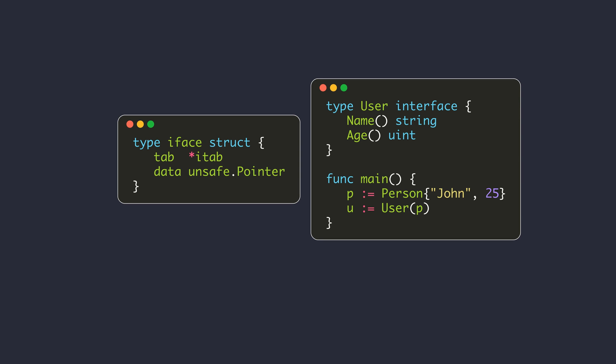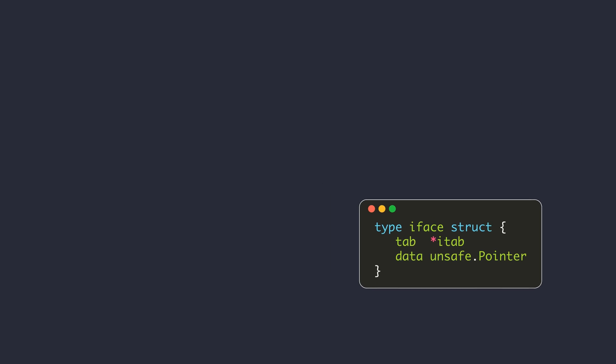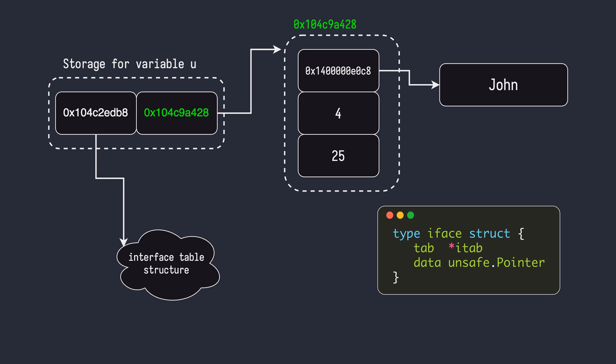Two pointers are stored in the memory for the interface value. The first pointer points to the interface table, which contains information about the type stored in the interface, and the second pointer points to the associated data. Assigning a value of the person struct to the user interface initializes both words of the interface value. The data pointer points to a copy of the value of the person struct stored in variable P. New memory is allocated to store this copy, and a pointer to this newly allocated memory is stored in the data field of the iface struct.